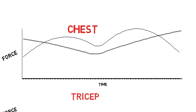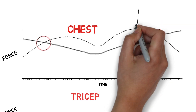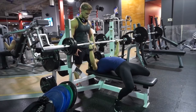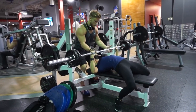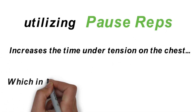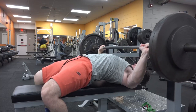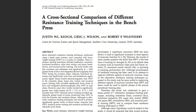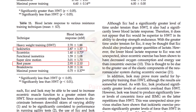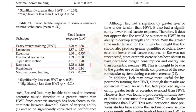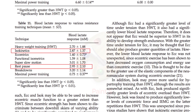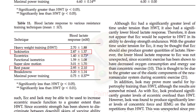When we combine these graphs, we see intersection points where the movement becomes more chest emphasis and more tricep emphasis. The vast majority of people fail right here — when the bar gets a couple inches off their chest in the concentric phase. What you can do is utilize pause reps, which increases time under tension on the chest, leading to a stronger bench press. Dr. Keio and colleagues did a comparison of different resistance training types and found that isometric and rest-pause training produced higher levels of blood lactate response, concluding that isometrics may be more useful for hypertrophy training than heavy weight.